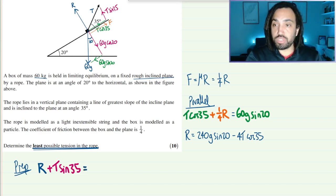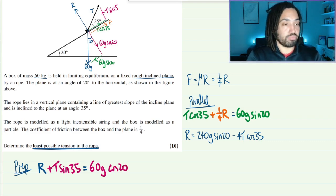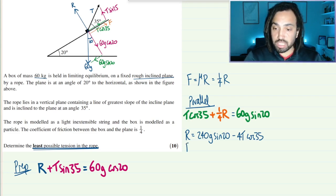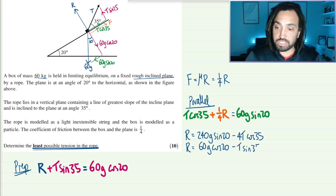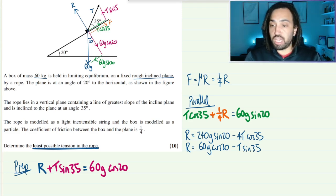So that's equal to the downs which is 60g cos 20. Great, so I'm going to take that and I'm going to rearrange for R just like I did with the other one and that will give me 60g cos 20 minus T sine 35. Excellent.